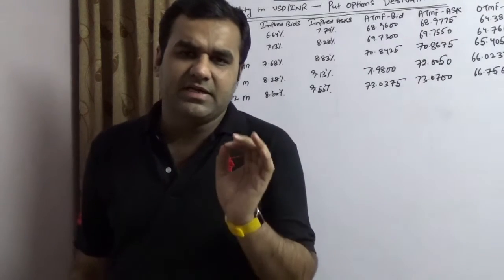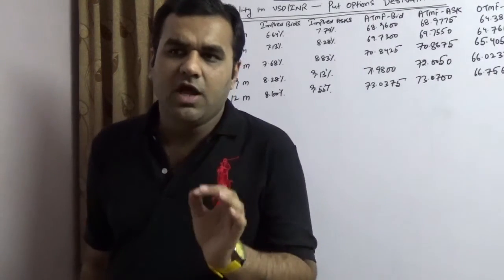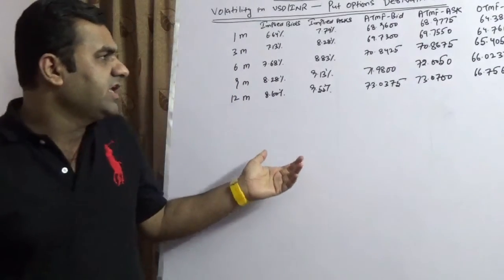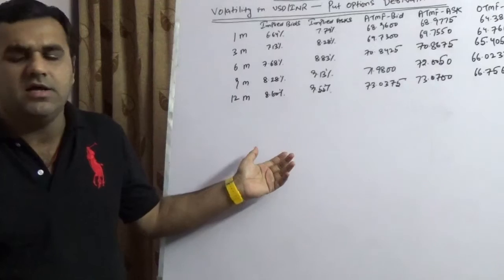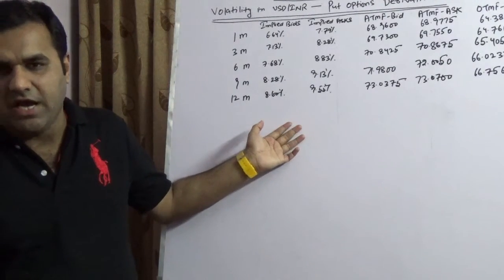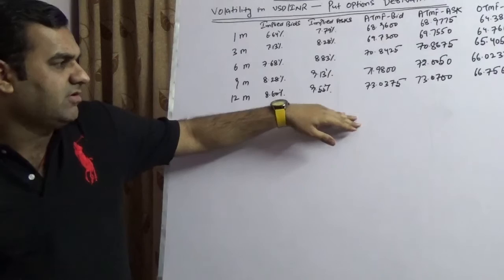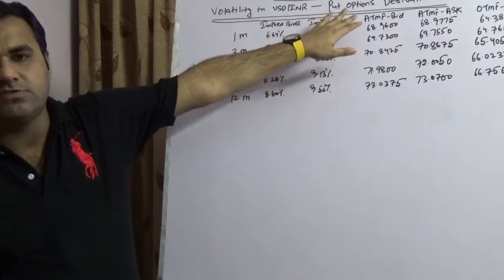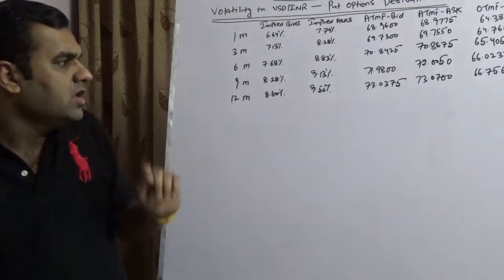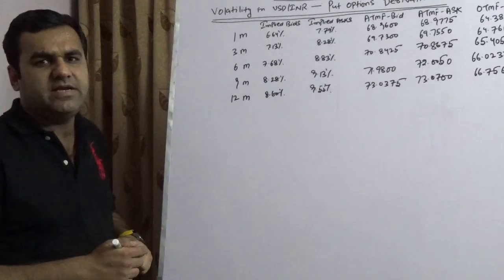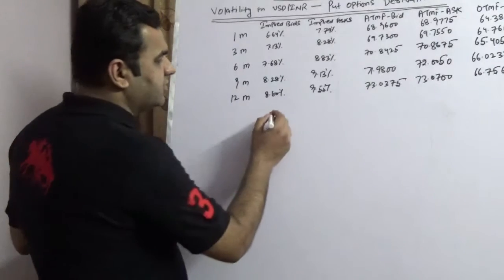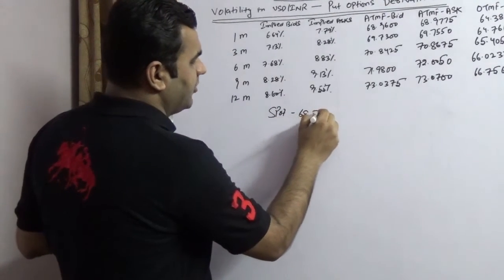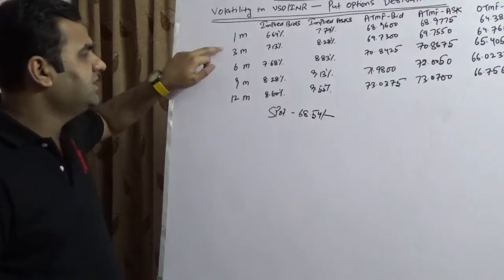Now what about a corporate treasurer? This presentation will take you through how to hedge your INR receivables using put option derivatives, because put option is for exporters. As we understand that INR is trading at 68.54, the spot price in this has taken at 68.54.